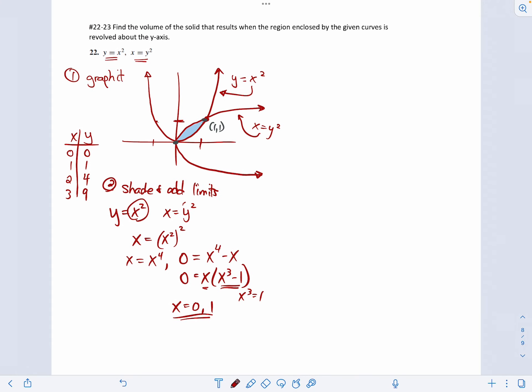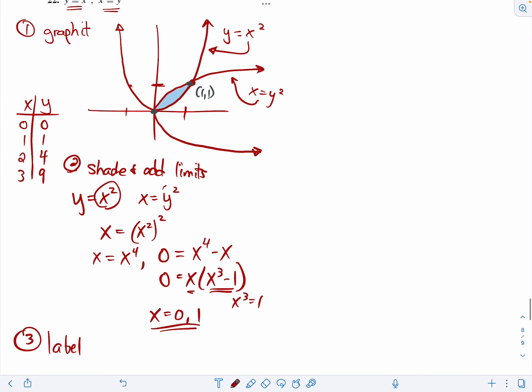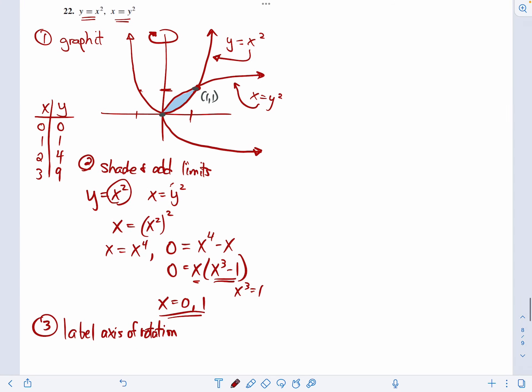Step number three is label the axis of rotation. We are rotating around the y-axis. So where that y-axis is, make an almost full circle, but at the end, put an arrow to show that we are revolving, spinning that region around the y-axis. Step four,